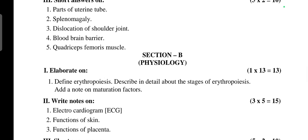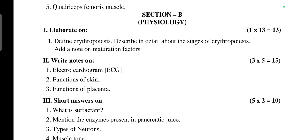Next, Section B Physiology: Define erythropoiesis, describe in detail about the stages of erythropoiesis, add a note on maturation factors - 13 marks. Electrocardiogram, short form ECG - 5 marks.